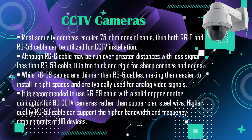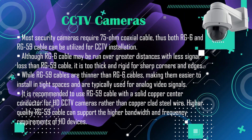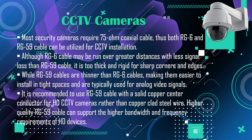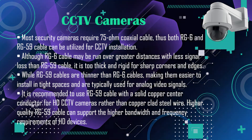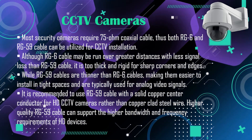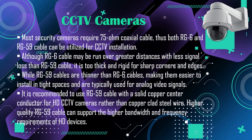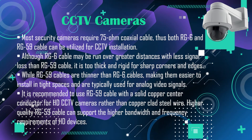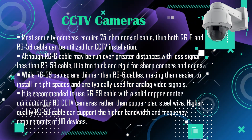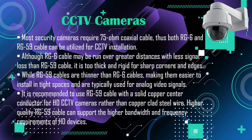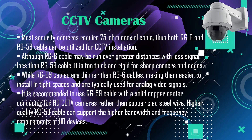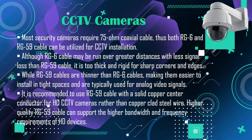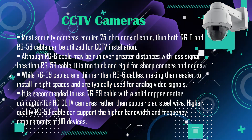RG59 cables are thinner than RG6 cables, making them easier to install in tight spaces and are typically used for analog video signals. It is recommended to use RG59 cable with a solid copper center conductor for HD CCTV cameras rather than copper clad steel wire. Higher quality RG59 cable can support the higher bandwidth and frequency requirements of HD devices.